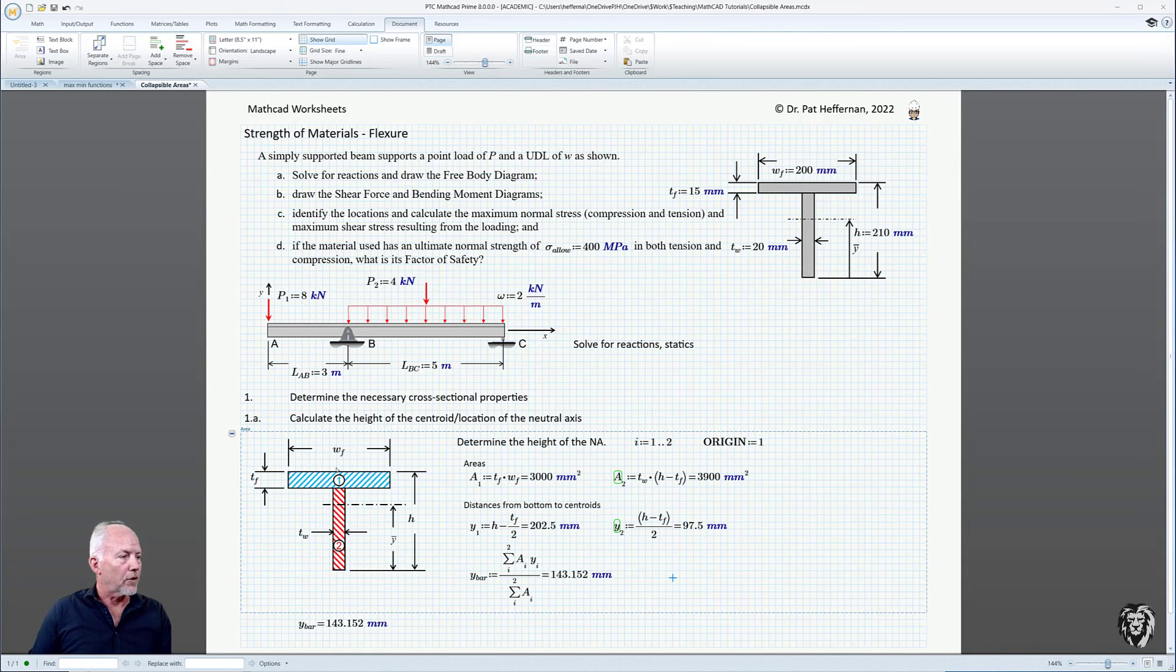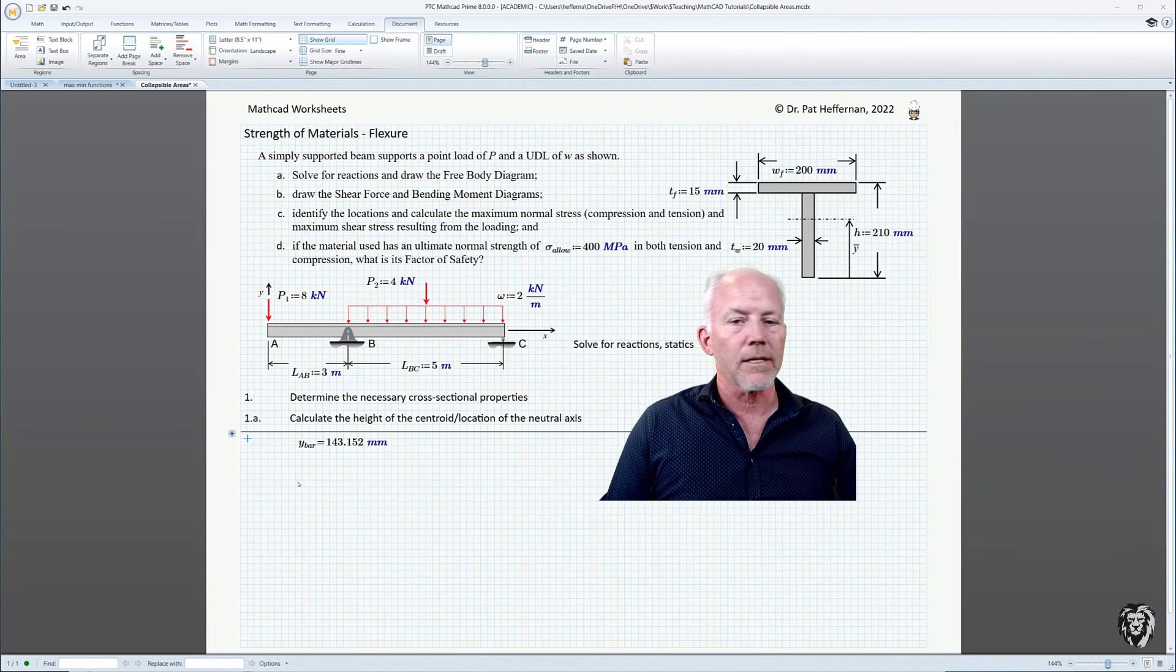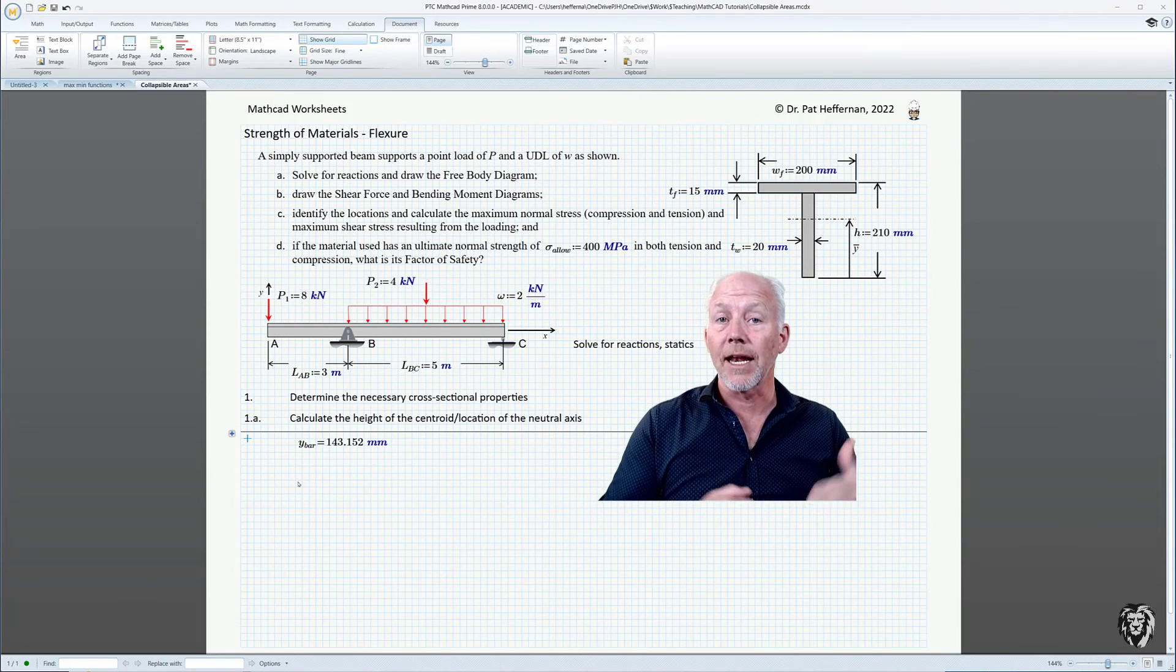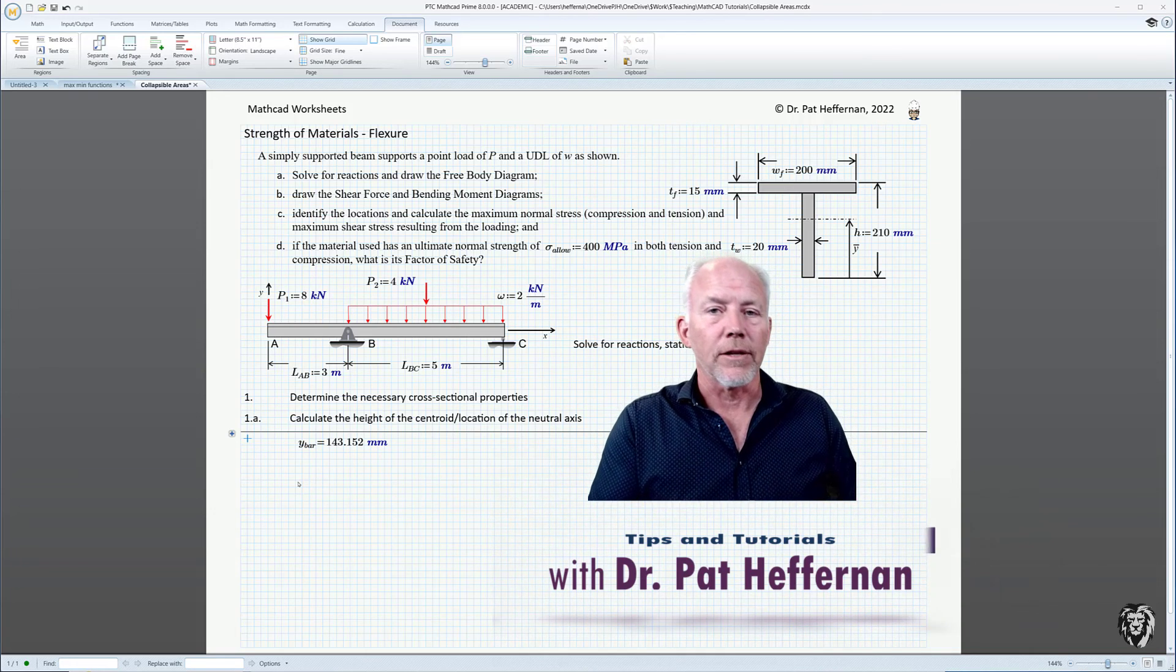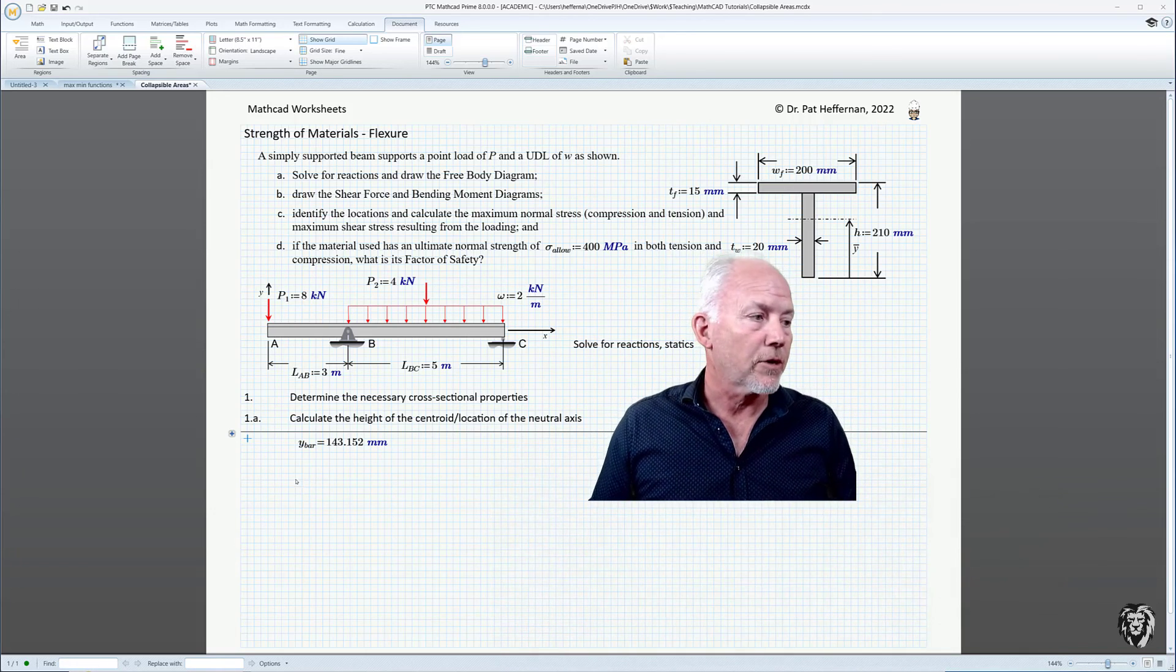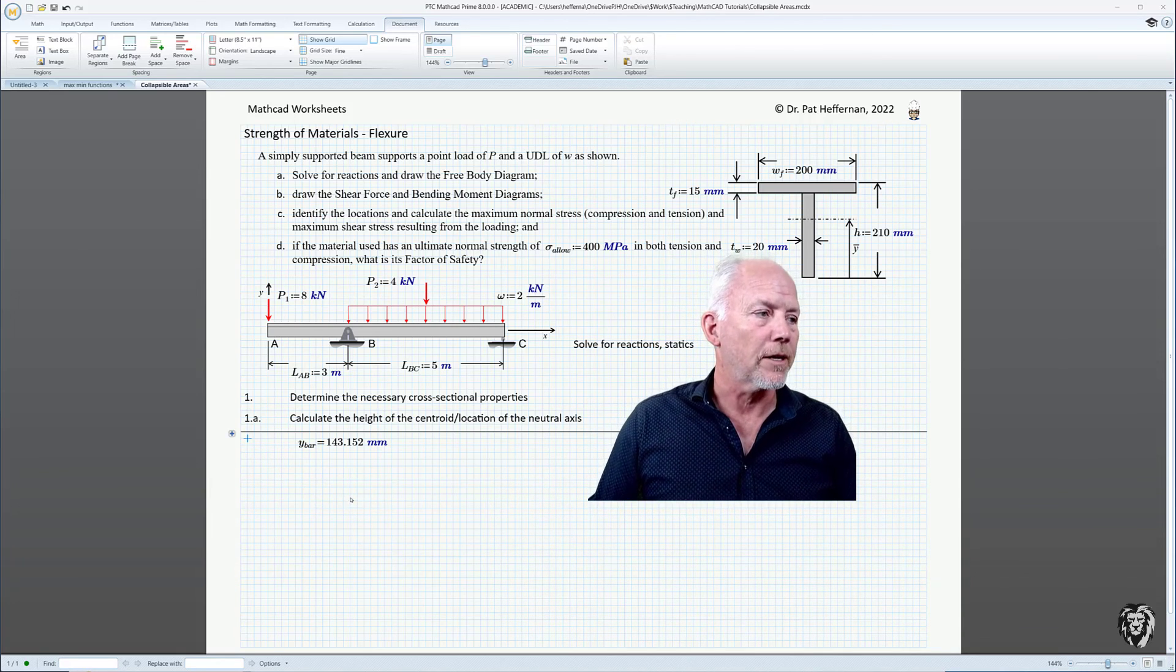And so for a complex calculation, you can have a whole bunch of these collapsible areas so that you can see and concentrate on the area that you're most interested in. So I personally find that as a really useful tool if you've got a complicated sheet that you're working on.